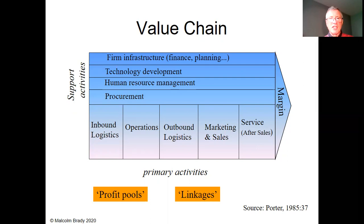You may see alternative versions, but essentially his primary activities are very much to do with the systems model: input, process, output. You can see inbound logistics, operations, outbound logistics. And then he adds two more: marketing and sales, which support getting the product out, and then service — after-sale service. So that's the main line of getting the product out to the customer.